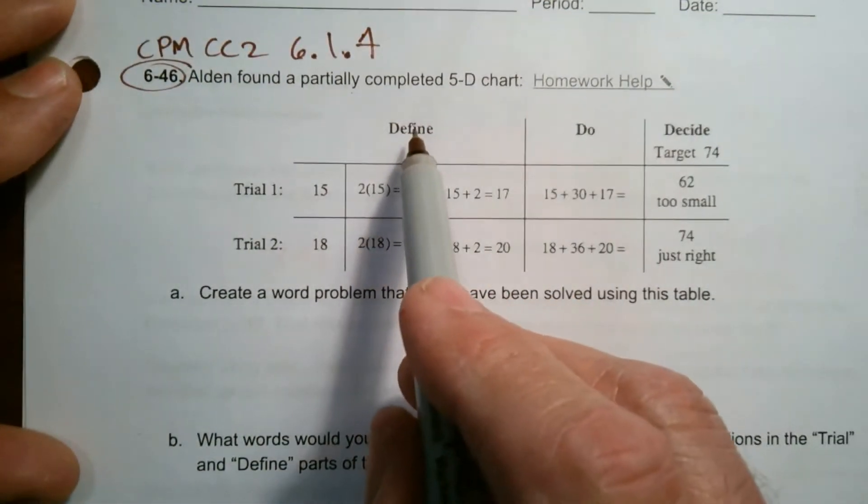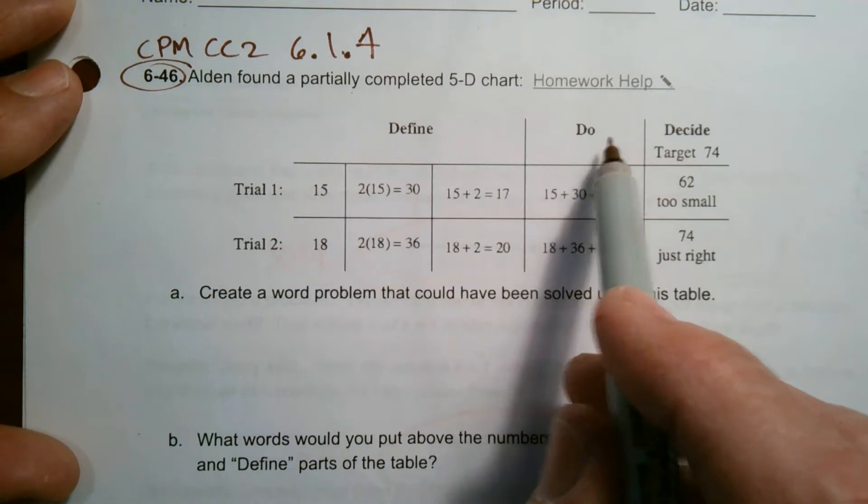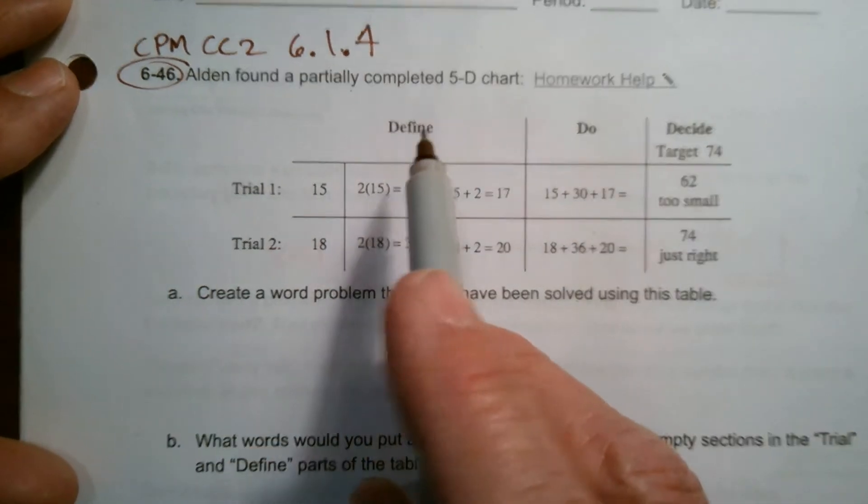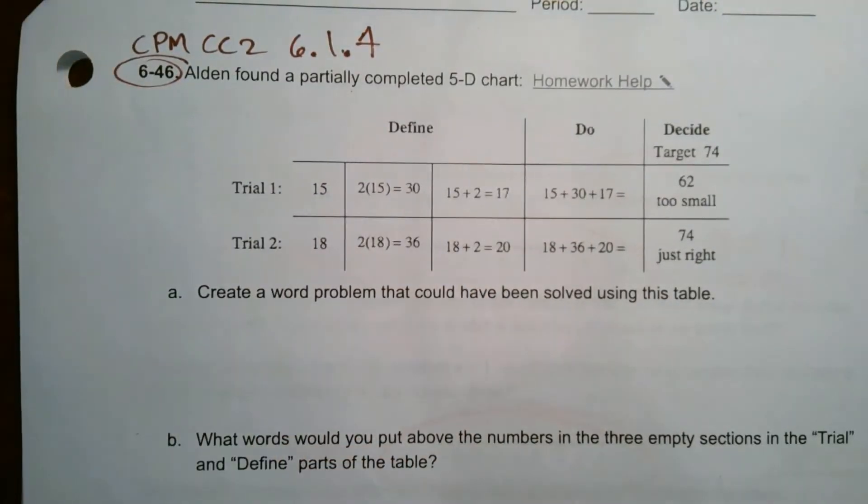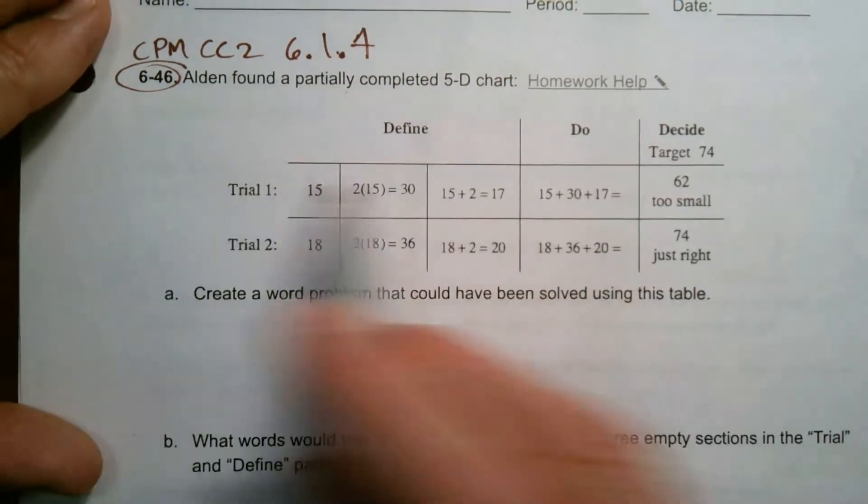So the 5D process, remember, is your define, do, decide, declare, diagram - draw what you see.